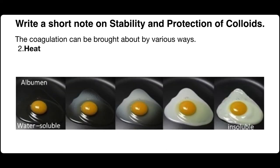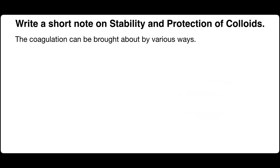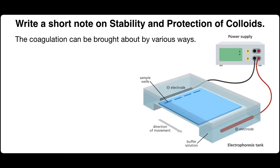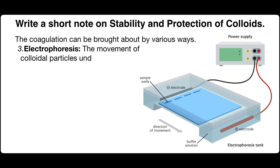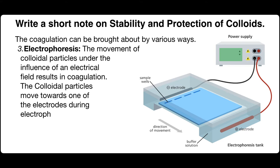Second, heating: some colloids like egg albumin coagulate merely on heating. Third, electrophoresis: the movement of colloidal particles under the influence of an electric field results in coagulation. The colloidal particles move towards one of the electrodes during electrophoresis.